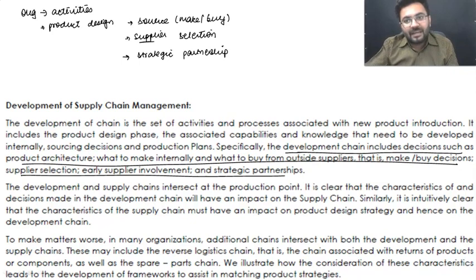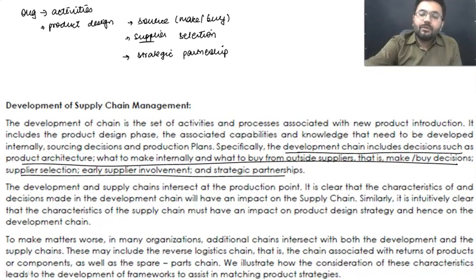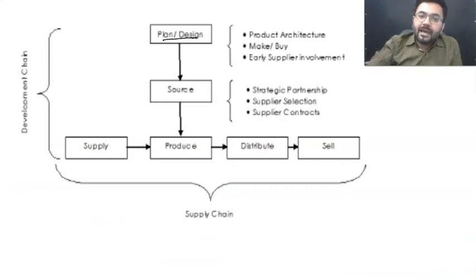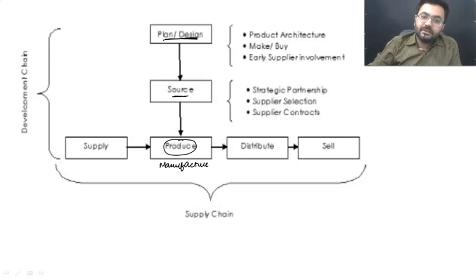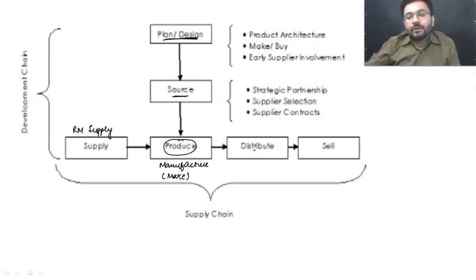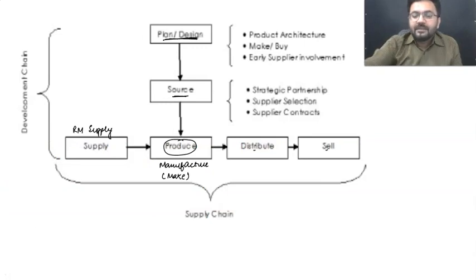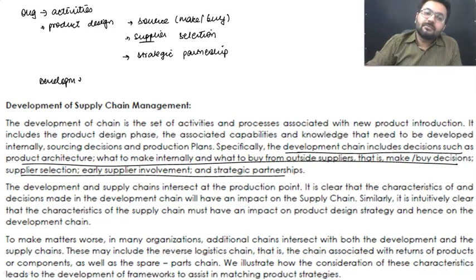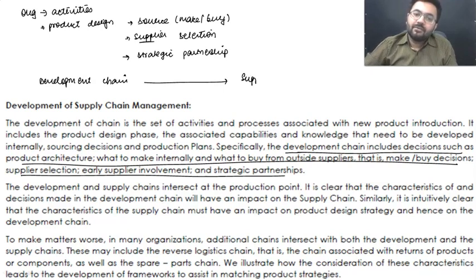Whatever decisions which you are going to make in the development chain are going to impact your supply chain management. If you decide to make your own product, you select the produce part. If you decide to buy, then only the supply and distribution part is going to be there — there will be no production stage. Any decision made in the development chain is going to have an impact on your supply chain as well.